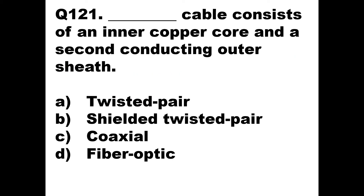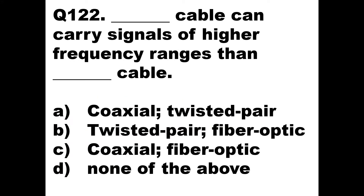Question 121: A dash cable consists of an inner copper core and a second conducting outer sheath. If you see the structures, twisted pair does not have this, shielded twisted pair also does not have this. Coaxial cable has an inner copper core and a second conducting outer sheath, so the answer is option C — coaxial cable.